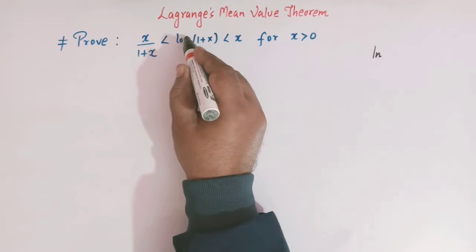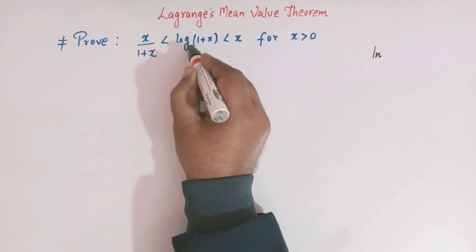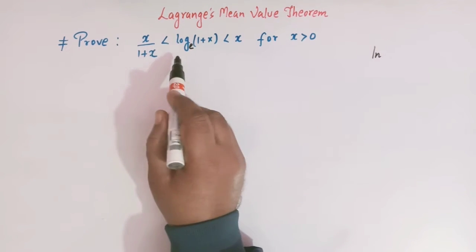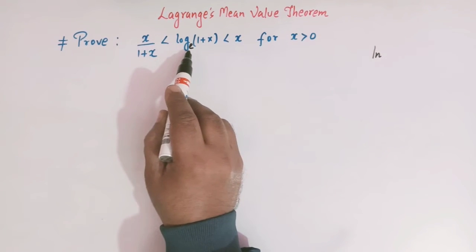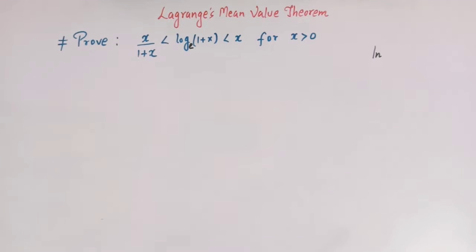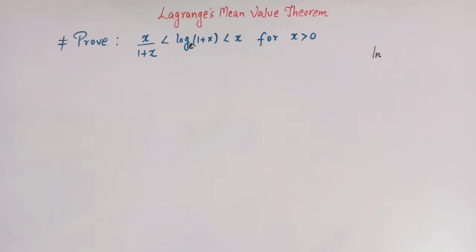So here it is understood that the base is the exponential number e. Let us start and quickly see the statement of Lagrange's mean value theorem.